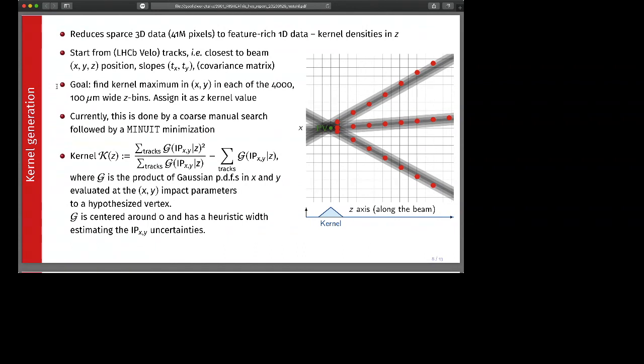We start from tracks, this can be any type of tracks but in our case it should be Velo tracks. They have the following parameters: the closest to beam position, the slopes, and also the covariance matrix which we will use later. The goal will be to find kernel maxima in X, Y planes in each of the 4000 bins that we have in Z. Then we assign this maximum as the Z value of a kernel. Currently this is done by a coarse manual search in X, Y and then followed by a minimization. The kernel in Z is defined with this expression where G is the product of Gaussian PDFs in X and Y. This Gaussian PDF is evaluated at the impact parameters, the IPX and IPY impact parameters, to a hypothesized vertex. So you scan along Z and then evaluate these kernel Gaussians and sum over all tracks. G is centered around 0 and has some width that estimates the IPX and IPY.